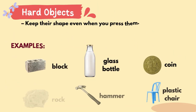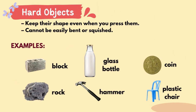What are Hard Objects? Hard objects keep their shape even when you press them. They cannot be easily bent or squeezed. Examples: brick, rock, glass bottle, hammer, coin, and plastic chair.